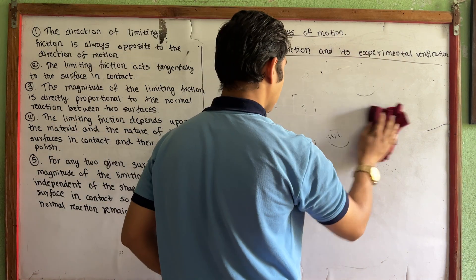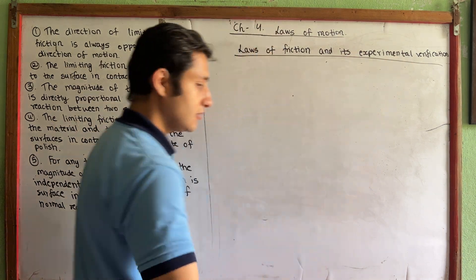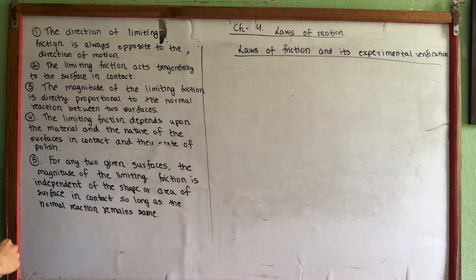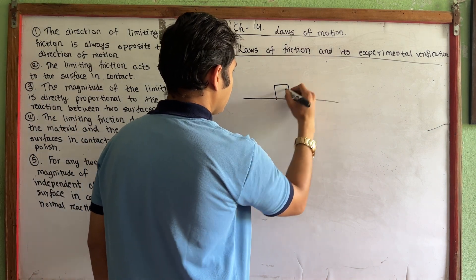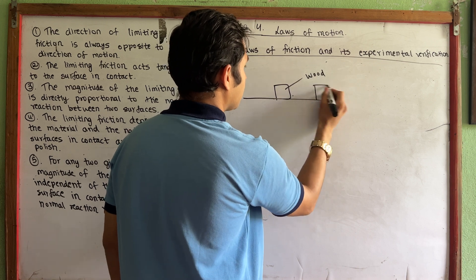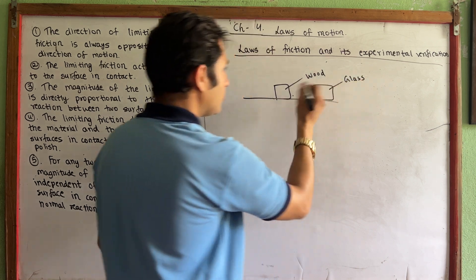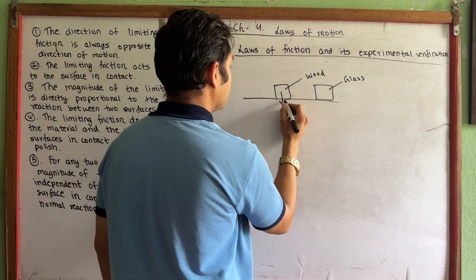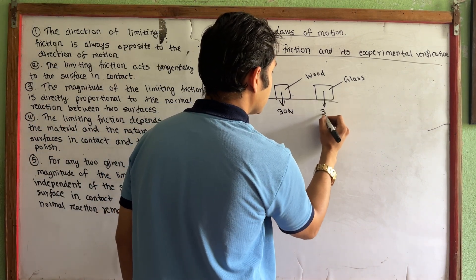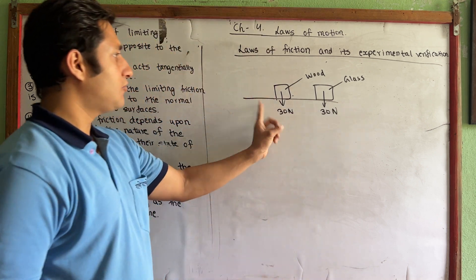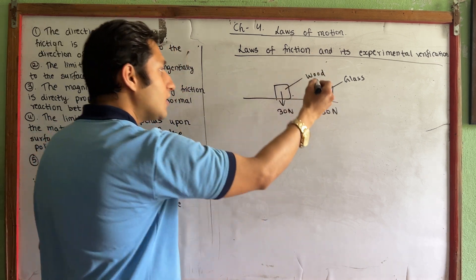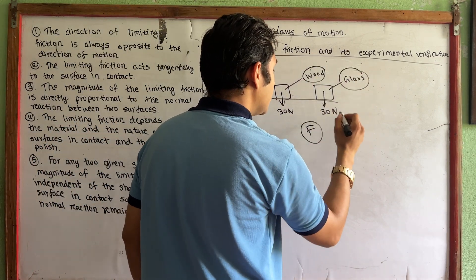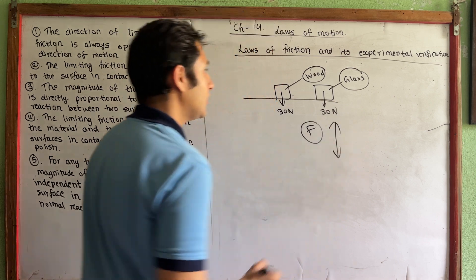Let's move on to the next point — the fourth law: the limiting friction depends upon the material and the nature of the surface in contact. Different materials have different frictional forces.